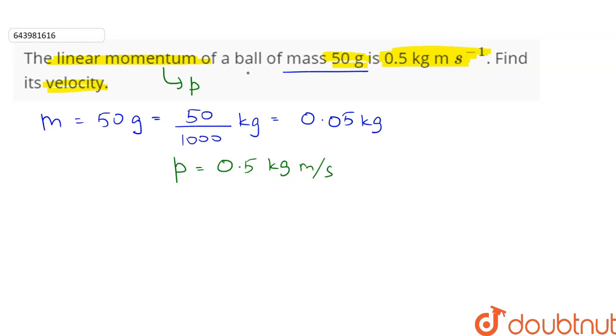The linear momentum of a ball is defined as the product of the mass M into its velocity V. So P is equal to the mass M into the velocity V. We need to calculate the velocity V. So upon rearranging we get V equal to the linear momentum P divided by the mass M.